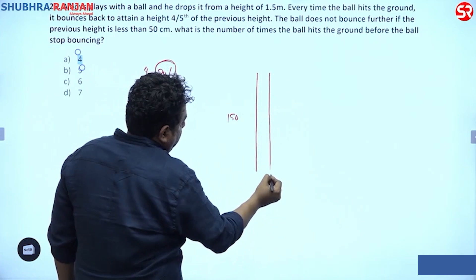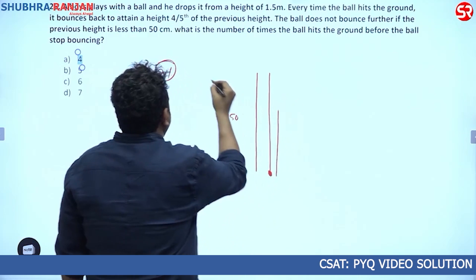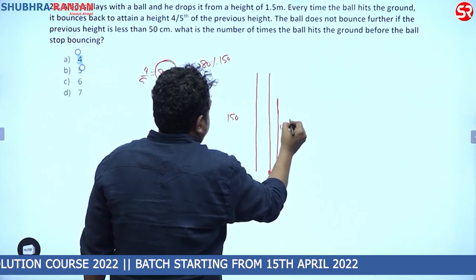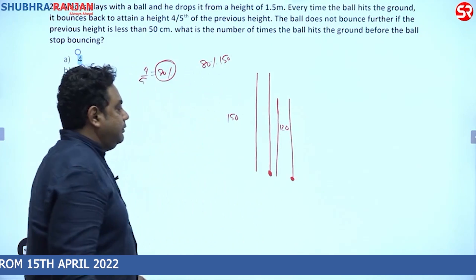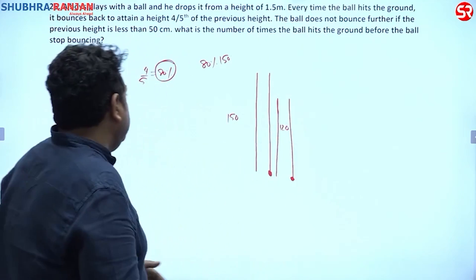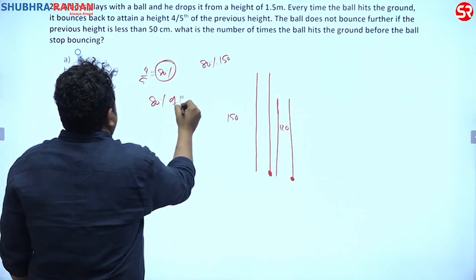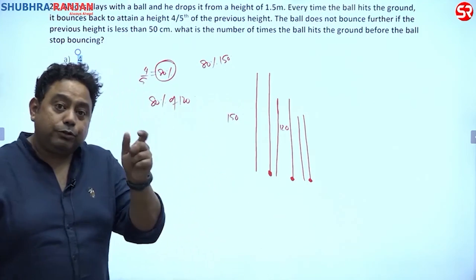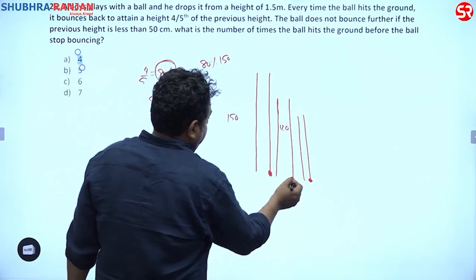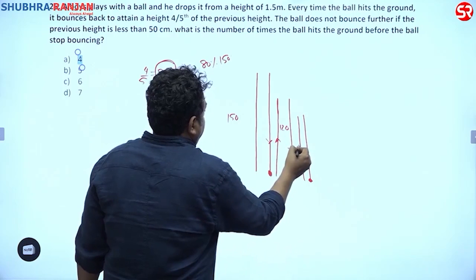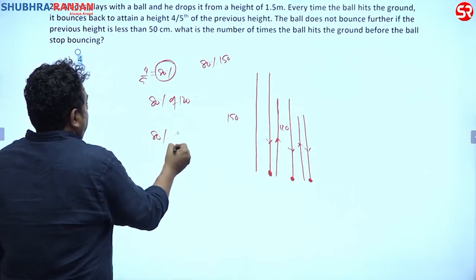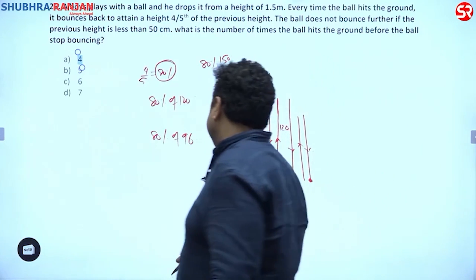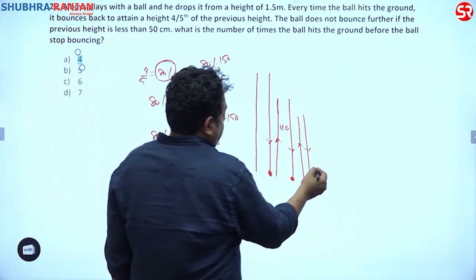First hit: ball dropped from 150 cm, bounces up to 80% of 150 = 120 cm. Second hit: bounces up to 80% of 120 = 96 cm. Third hit: bounces up to 80% of 96 = 76.8 cm. Each time the ball hits the ground counts as one hit.